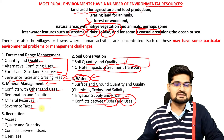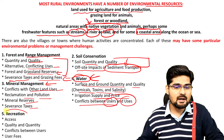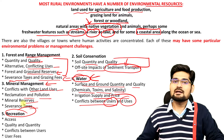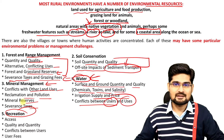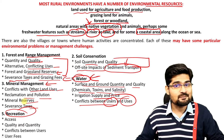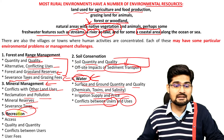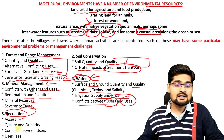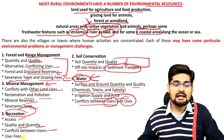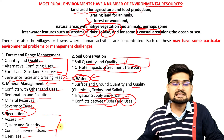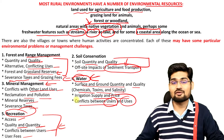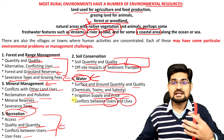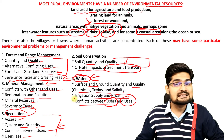Further, if you observe, there is the recreational aspect where people go to the countryside and rural areas for recreation. The access, quality and quantity, conflict and user fees — these are the aspects to be taken care of. There are challenges in these sectors.